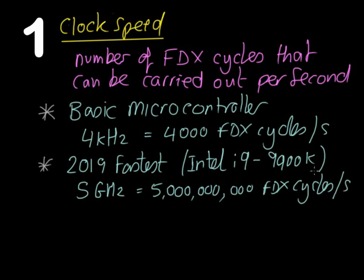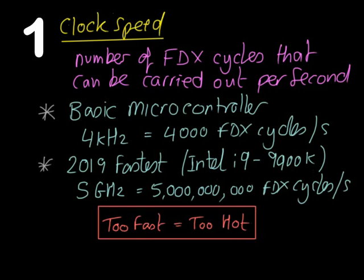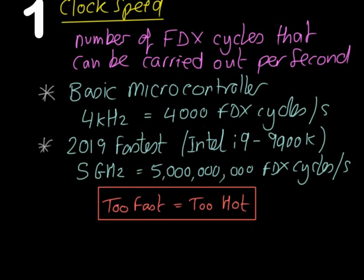The thing about microprocessors is, when they start running fast, a problem occurs. If they get too fast, they also get too hot. And that's a massive problem for a desktop computer system. So it's crucial you understand that you can't just keep ramping up the speed of a microprocessor as fast as you want, because it will get too hot eventually.